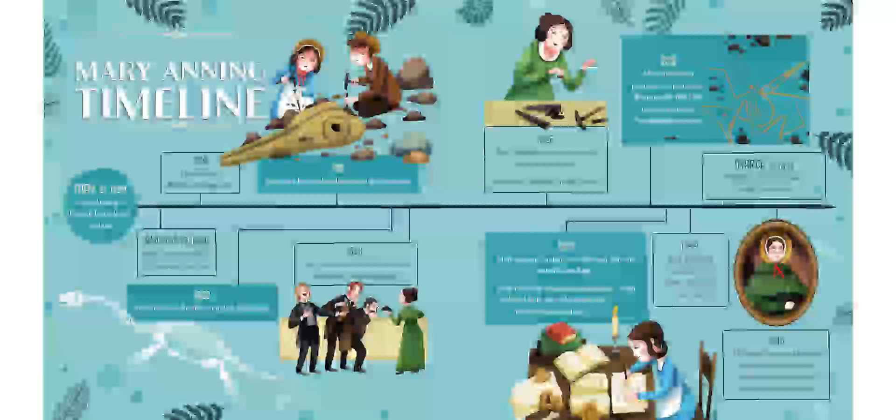In 1828, Mary discovers a pterosaur, a prehistoric flying reptile that later becomes known as Pterodactylus macronyx. In 1829, Mary goes to London, her first and only trip out of Lyme Regis. Mary discovers a fish believed to be an evolutionary link between sharks and rays. In 1844, King Frederick Augustus II of Saxony visits Mary in her shop. March 19th, 1847, Mary dies of breast cancer at the age of 47. In 2010, the Royal Society of London names Mary Anning one of the ten most influential British women of science.